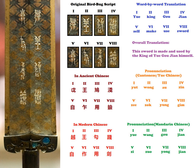Bird-worm seal script, known in Simplified Chinese and Traditional Chinese as Niao Changzhuan (Pinyin), is a type of ancient seal script originating in China.